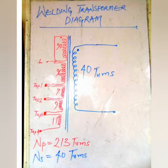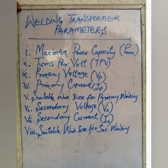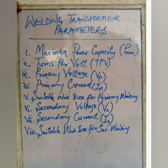We do not yet know the voltage implications of these different turn counts. There are parameters we must find about our machine, as no information was written on it. These parameters are: 1. Maximum power capacity; 2. Turns per volt (TpV); 3. Primary voltage (VP); 4. Primary current (IP); 5. Suitable wire size for primary windings (SWG Primary); 6. Secondary voltage (VS); 7. Secondary current (IS); 8. Suitable wire size for secondary windings (SWG Secondary). To find these values, we will use very simple formulas.